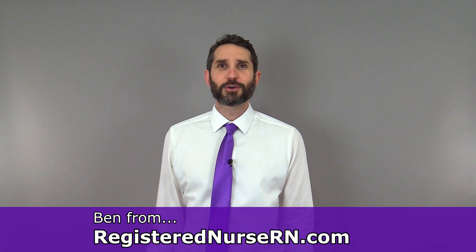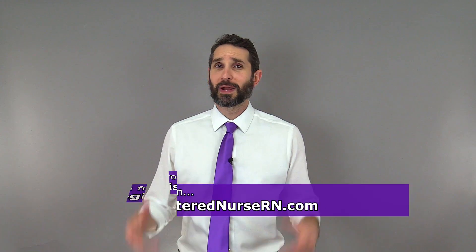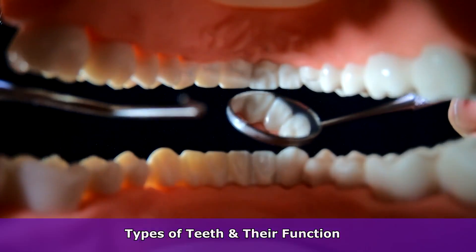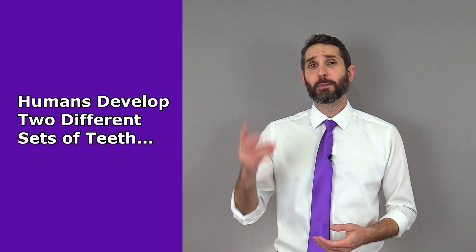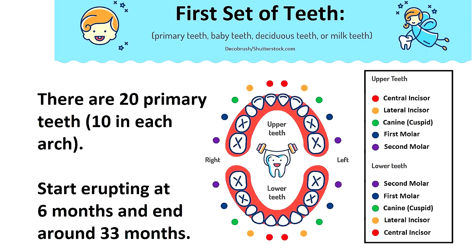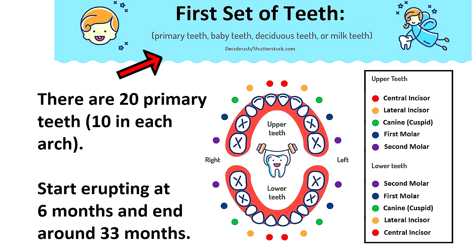Hey everyone, this is Ben with RegisteredNurseRN.com and in this video I'm going to talk about the different types of teeth and their function. First, it's important to note that humans generally develop two different sets of teeth throughout life. The first set of teeth can be referred to as baby teeth, primary teeth, deciduous teeth, or even milk teeth, and there are 20 of those.